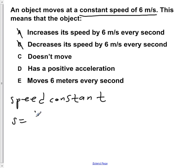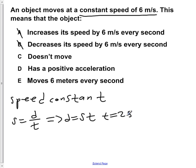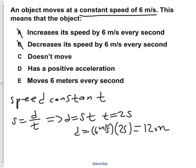C states that the object is not moving. But if you remember, speed is equal to distance over time, and we can rearrange this so that distance equals speed times time. If we pick a time of 2 seconds, the distance would be 6 meters per second times 2 seconds, which gives us 12 meters. So our object would have moved 12 meters — it's not 0 — so C is wrong.